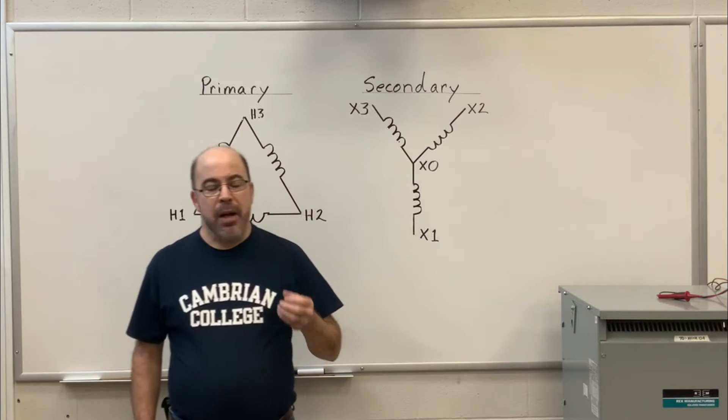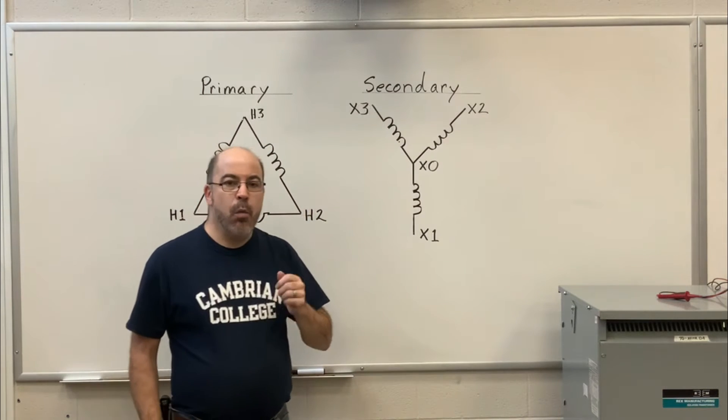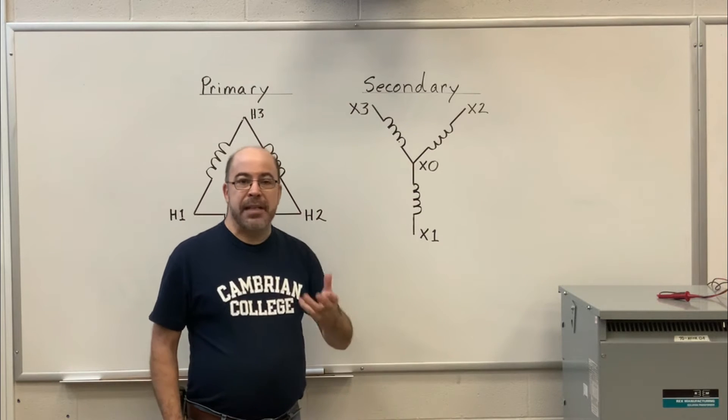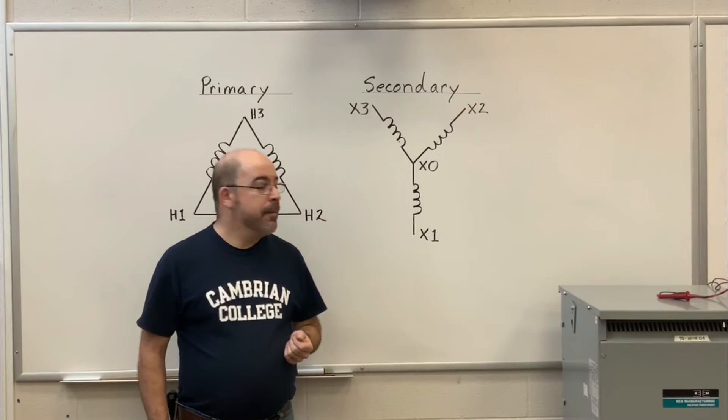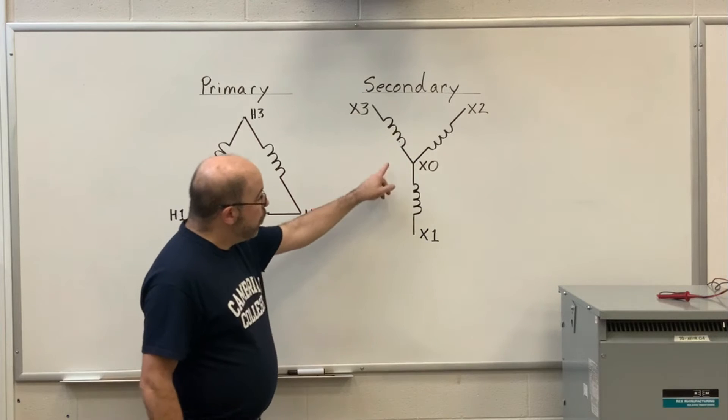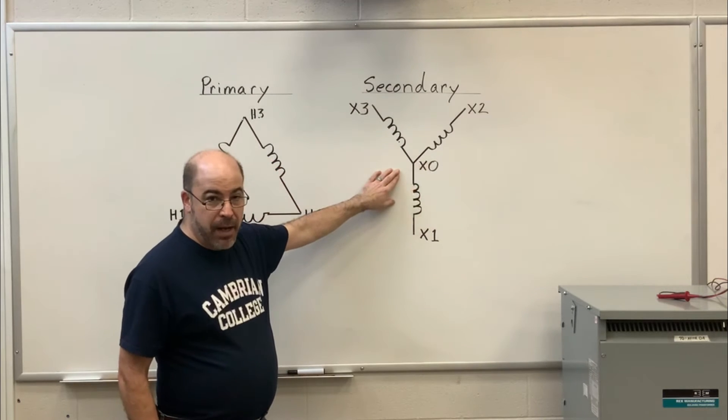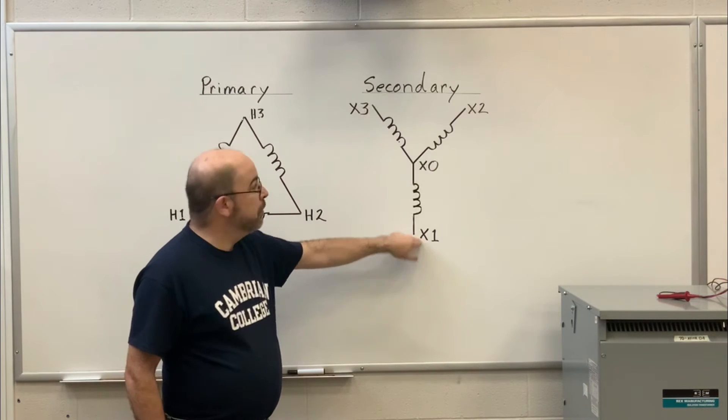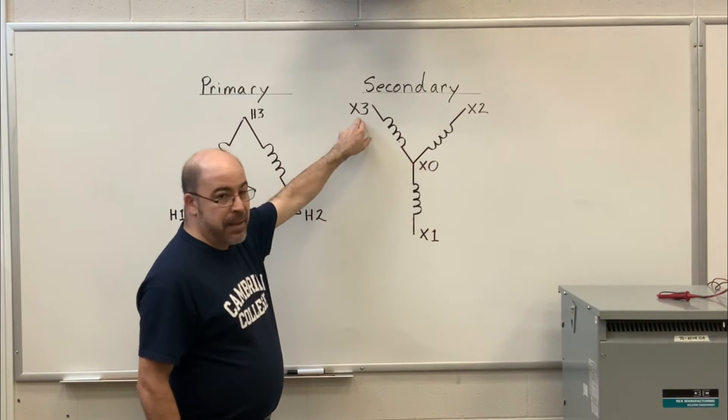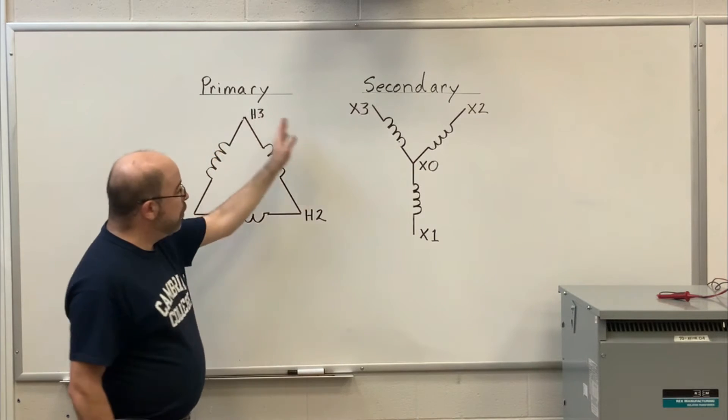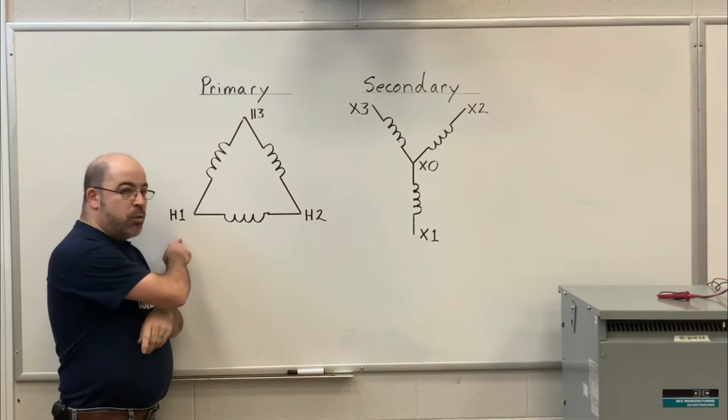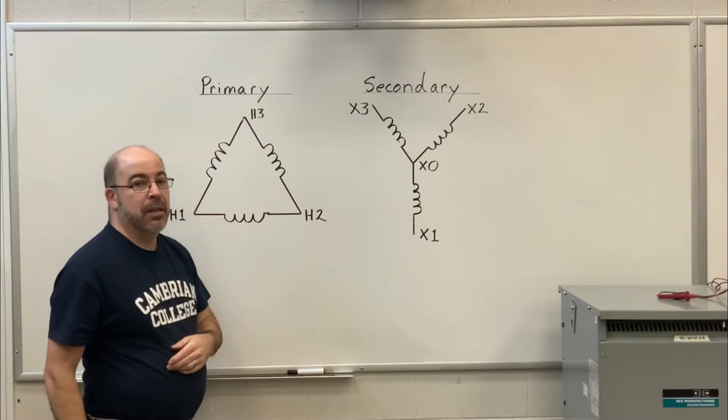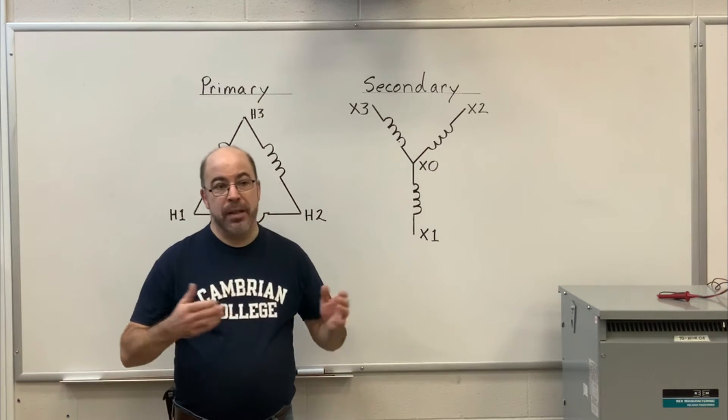And finally, that last test where I want to verify that none of the windings, primary or secondary, is going to ground because that's going to create a grounded circuit. And in this case, we're going to make sure that X0 is not tied to ground. And we're going to test between X1 to ground, X2 to ground, X3 to ground. Same thing will apply in the primary windings, H1 to ground, H2 to ground, H3 to ground. So those are the three things that we're going to be testing.